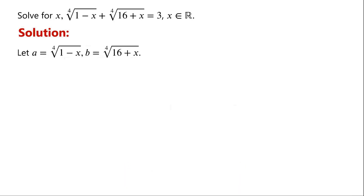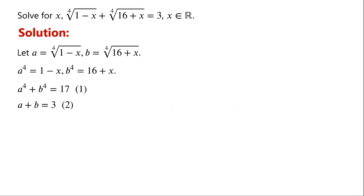Let a equal the fourth root of 1 minus x, and b equal the fourth root of 16 plus x. Then a to the power of 4 equals 1 minus x, and b to the power of 4 equals 16 plus x. So a⁴ plus b⁴ equals 1 minus x plus 16 plus x, which is 17. We label this as equation 1. From the original equation we know that a plus b equals 3. We label this as equation 2. Now we have two equations and two variables.